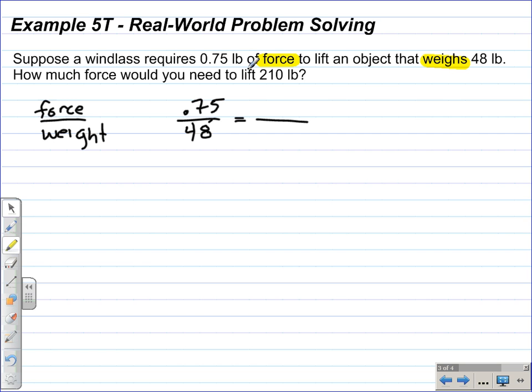On the right-hand side, I get from the second sentence, how much force, these three words are the question word, how much force, which means we're going to be solving for force, which needs to be in the numerator, since it's a direct proportion or a direct relationship. Do you need to lift 210 pounds? That gives me the third number of my proportion. And then I solve.